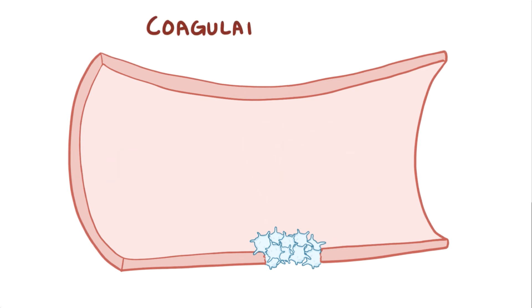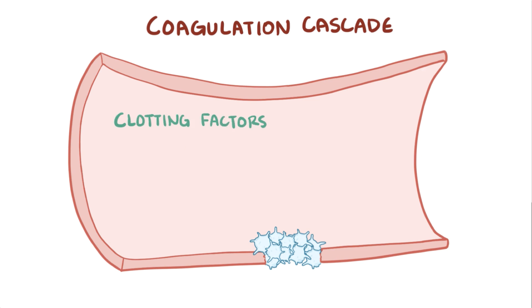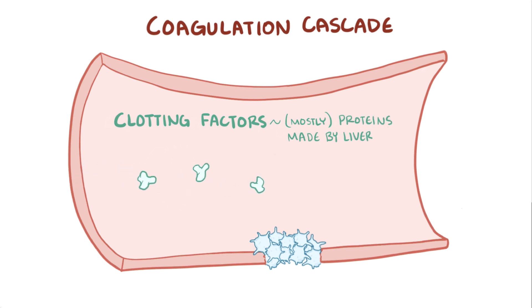After that, the coagulation cascade is activated. First off, in the blood there's a set of clotting factors, most of which are proteins synthesized by the liver, and usually these are inactive and just floating around in the blood.